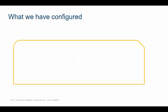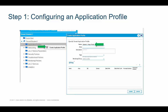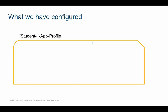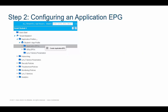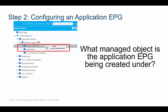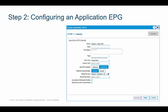So far, all we've created is like a glorified folder that represents the application. I created the Student One app profile — that's what I labeled it in my lab screenshot. Step two is to create EPGs within that application profile. I select my application profile, right-click it, and create the application EPG. A window pops up and I simply label the EPG.